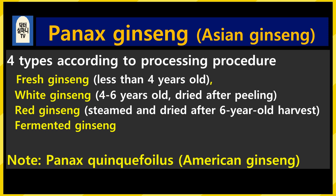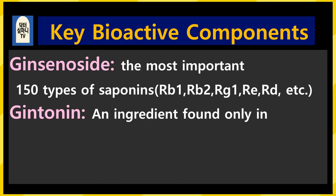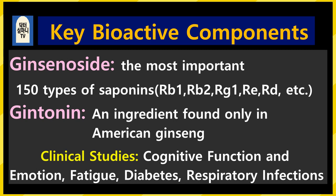American ginseng, scientific name Panax quinquefolius, also has similar effects, but not as much research has been done as with Asian or Korean ginseng. The most important active ingredient is ginsenoside, referring to 150 kinds of saponins. The most representative ones are RB1, RB2, RG1, RE, and RD. In American ginseng, there is a substance called gintonin, not found in Asian ginseng. In clinical studies, this ingredient has significant effects on cognitive function, emotion, fatigue, diabetes, and respiratory infections.